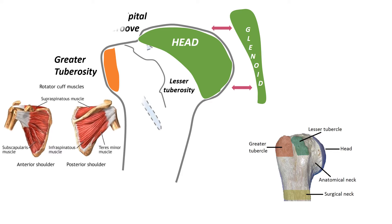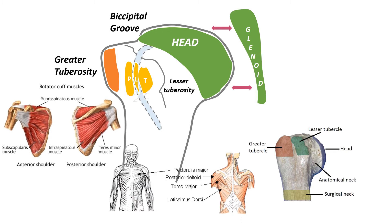Posteriorly lies the bicipital groove or intertubercular sulcus, through which the long head of biceps brachii and the ascending branch of the anterior circumflex humeral artery pass. It is crossed by the transverse humeral ligament from greater to lesser tubercle. Remember the mnemonic: lady between two majors. The floor of the groove provides attachment to latissimus dorsi, the medial lip to teres major, and the lateral lip to pectoralis major.